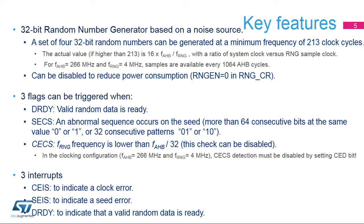The RNG performs a basic verification of randomness on the provided data. For example, if more than 64 consecutive bits have the same value — 0 or 1 — or there are more than 32 consecutive alternating 0s and 1s, a seed error current status flag is set. A clock error current status flag is set if the RNG clock is less than HCLK clock divided by 32. This check can be disabled, especially when the RNG clock is initialized low for maximum entropy.